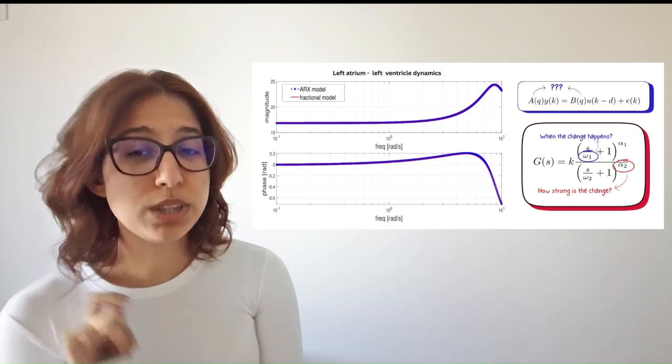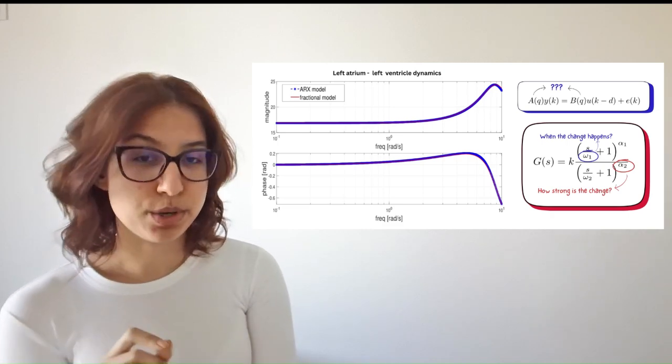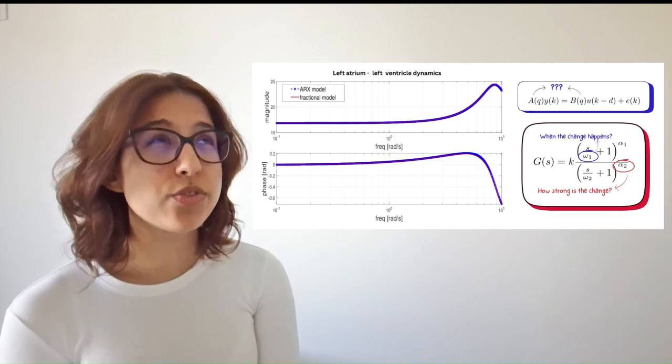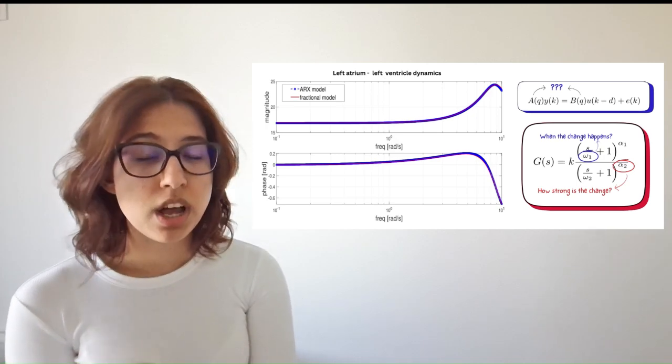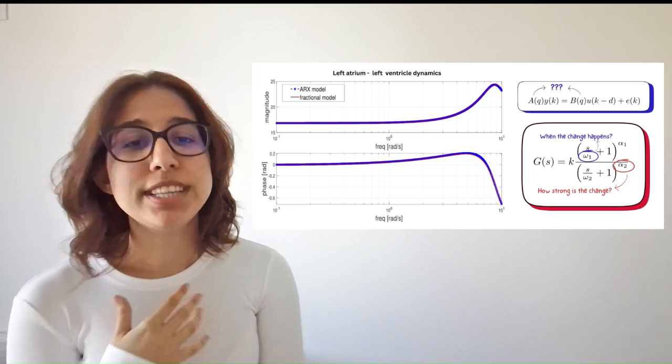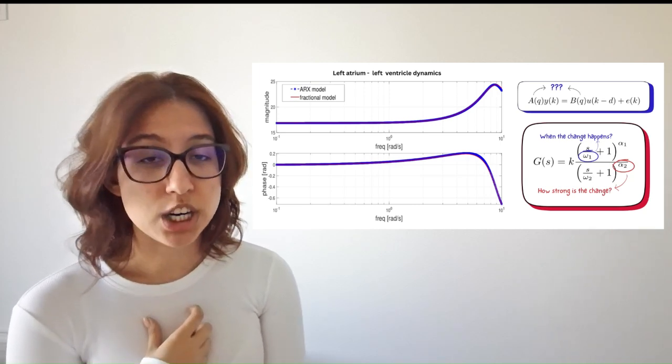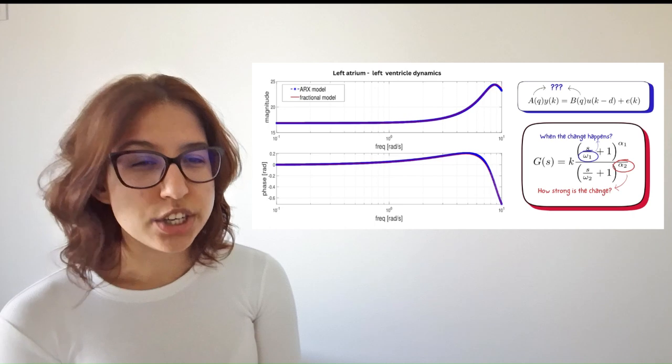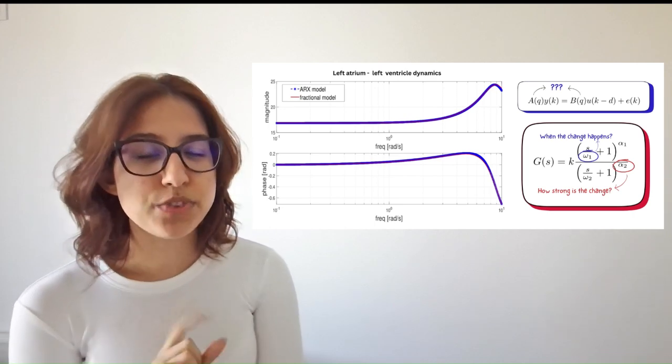The blue line comes from the standard approach. It's very accurate, but it's built from 20 parameters that are just numbers. They don't tell us anything meaningful about the heart and are very hard to interpret or apply.